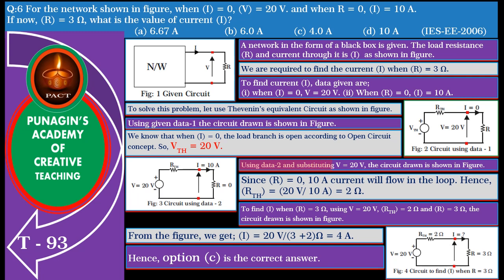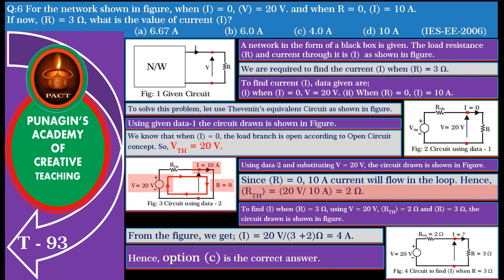Using data 2 and substituting V equals 20 volts, the circuit drawn is shown in the figure. Since R equals 0, a 10 ampere current will circulate in the loop. Hence, the Thevenin resistance RT equals 20 volts divided by 10 amperes, equal to 2 ohm. Now, to find I when R equals 3 ohm,